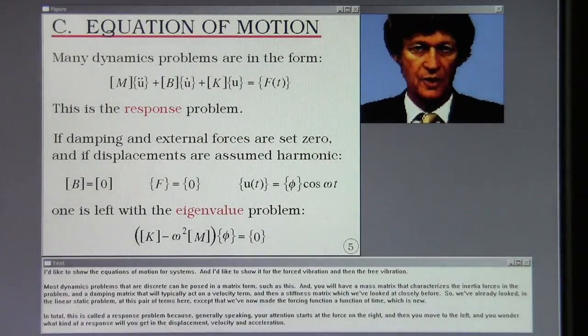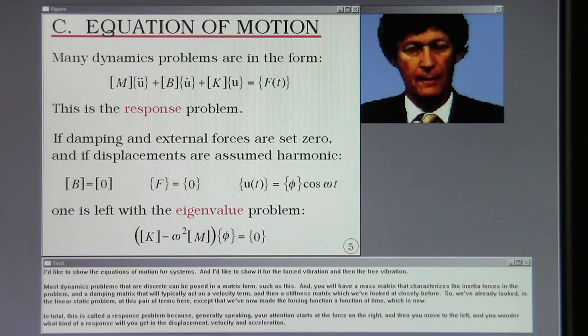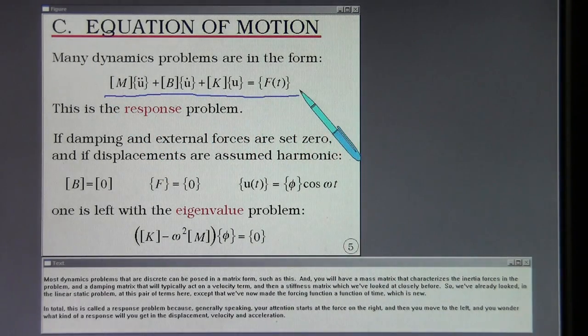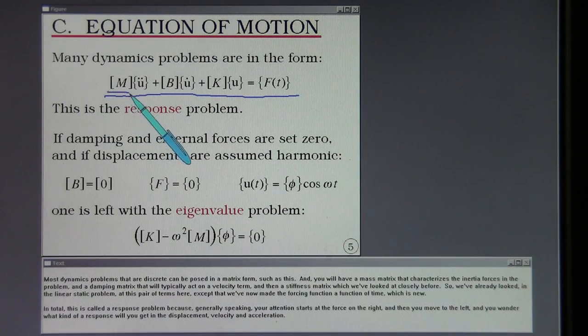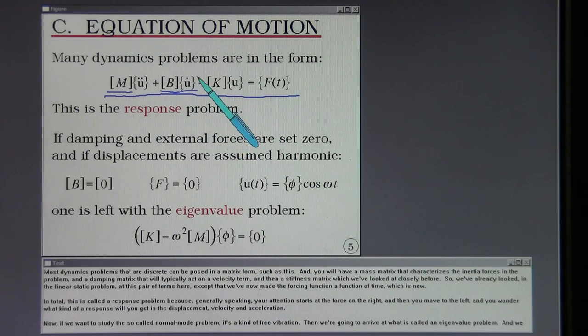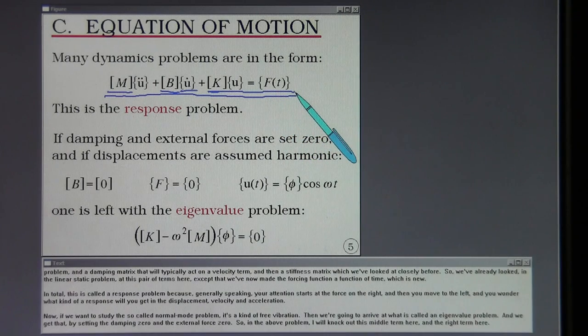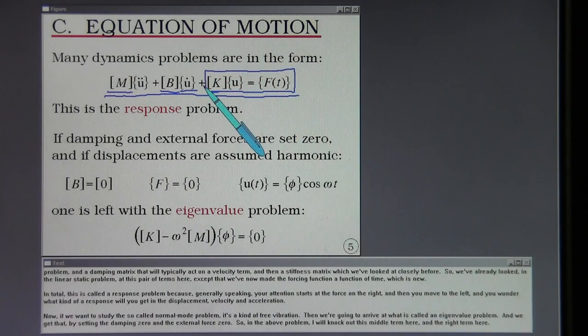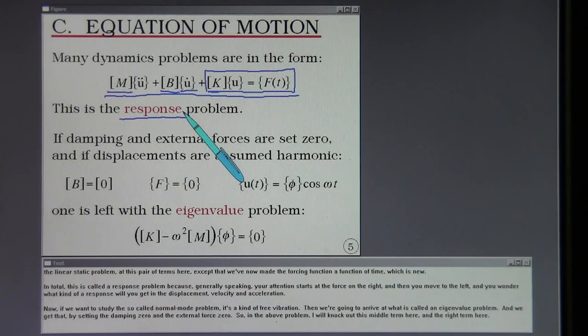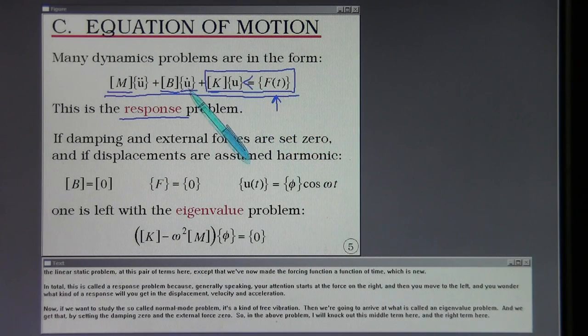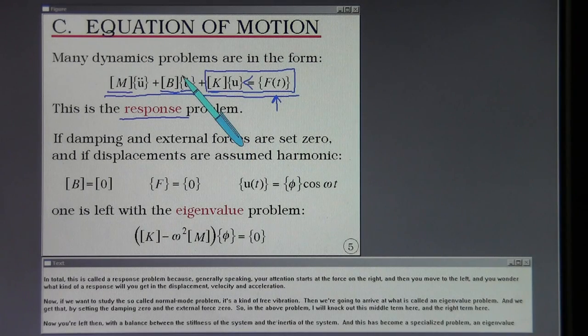I'd like to show the equations of motion for systems for forced vibration and then free vibration. Most dynamics problems that are discrete can be posed in a matrix form such as this, and you will have a mass matrix that characterizes the inertia forces in the problem, a damping matrix that will typically act on a velocity term, and then a stiffness matrix which we've looked at closely before. We've already looked in this linear static problem at this pair of terms, except that we've now made the forcing function a function of time, which is new. In total, this is called a response problem because generally speaking your attention starts at the force on the right, and then you move to the left, and you wonder what kind of a response will you get in the displacement, velocity, and acceleration.